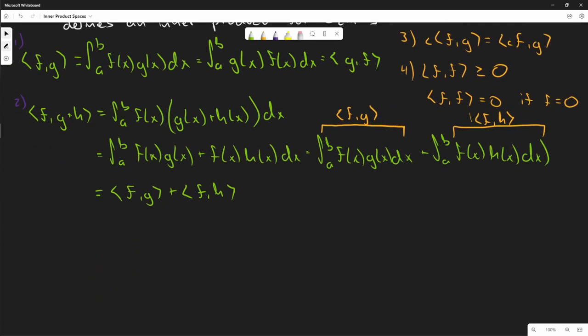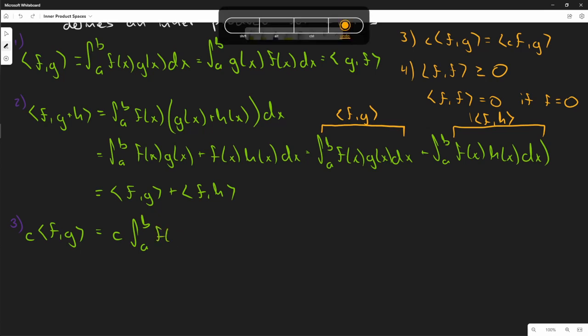The next one is the constant one, which is probably the easiest. Number three: c<f,g> is the same thing as a constant times the integral from a to b of f(x)g(x) dx.